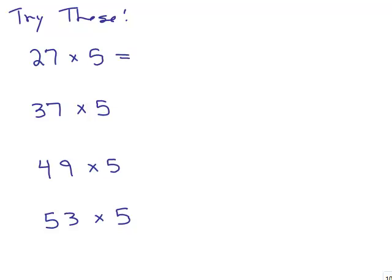Try these four problems, see how quickly you can get the answers. All right, so 27 times 5, you want to take half of 26, which is 13, put a 5 at the end.